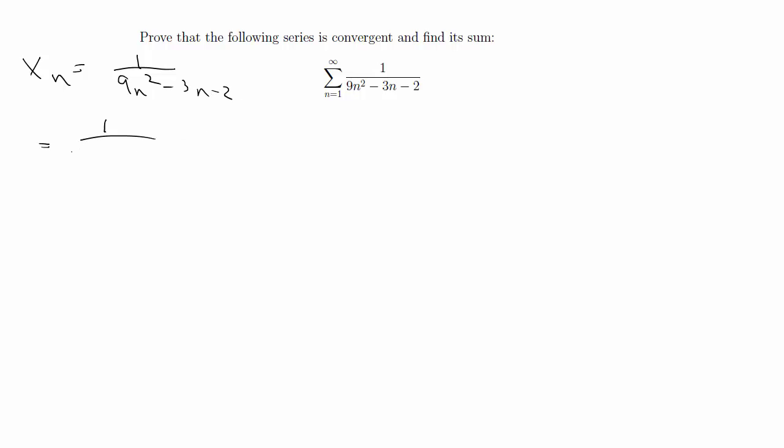You can factor this as 1 over (3n minus 2) times (3n plus 1), and then you're going to do partial fraction decomposition. To do that, you're going to say this equals A over (3n minus 2) plus B over (3n plus 1).